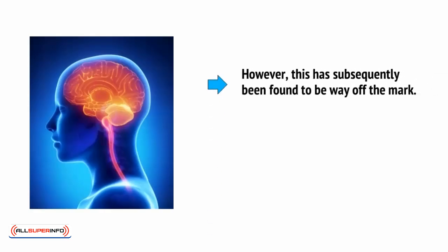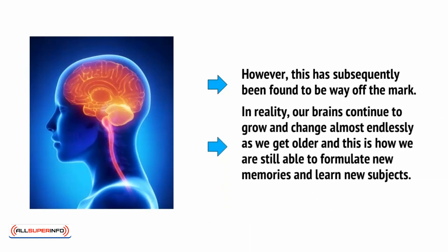Once upon a time, scientists believed that the brain would be set in stone after a particular age. In other words, it was thought that once we reached adulthood, the brain would no longer continue to grow or change shape. However, this has subsequently been found to be way off the mark. In reality, our brains continue to grow and change almost endlessly as we get older, and this is how we're still able to formulate new memories and learn new subjects.